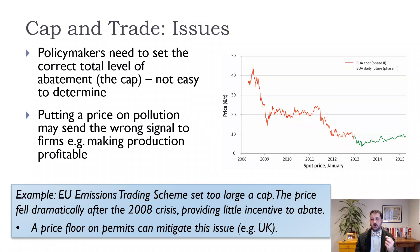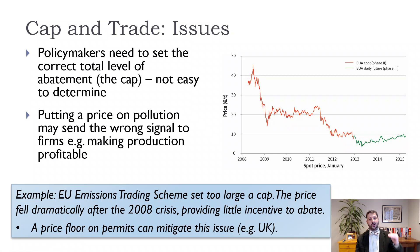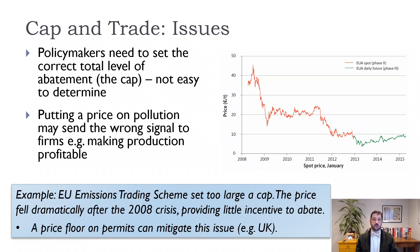This requires policymakers to set the correct total level of abatement, which is not always easy. One thing the European Union found was that they had too large a cap on carbon dioxide, and it didn't provide enough incentive because the price to pollute was just too low. You want the price to be higher so firms have an incentive to invest in technology to reduce pollution. In 2013 to 2015, the prices were too low — firms could just buy permits more cheaply than investing in technology. In that case, what you'd really want to do is reduce those caps — pass a new law reducing them by 25% or 30%, whatever it takes — to get that price back up and provide the incentives to reduce pollution.